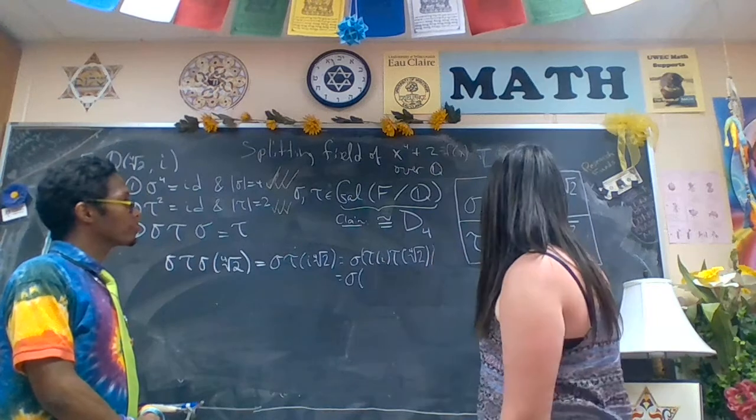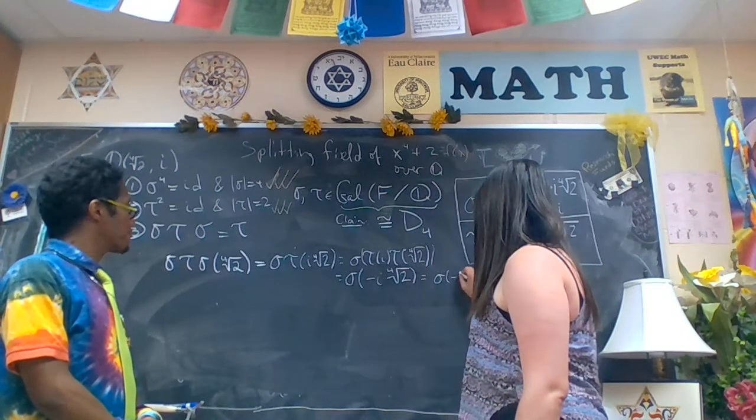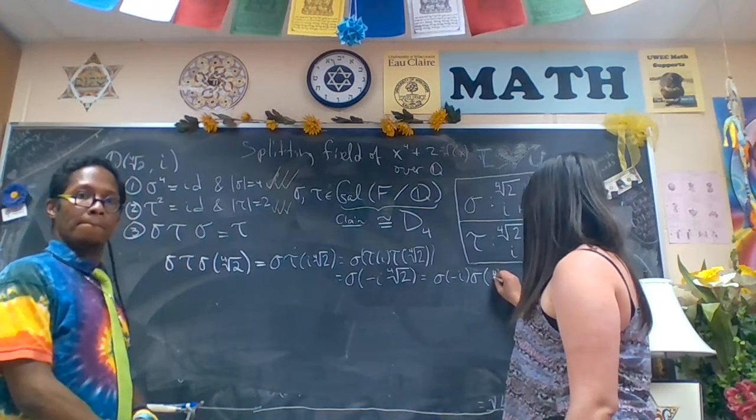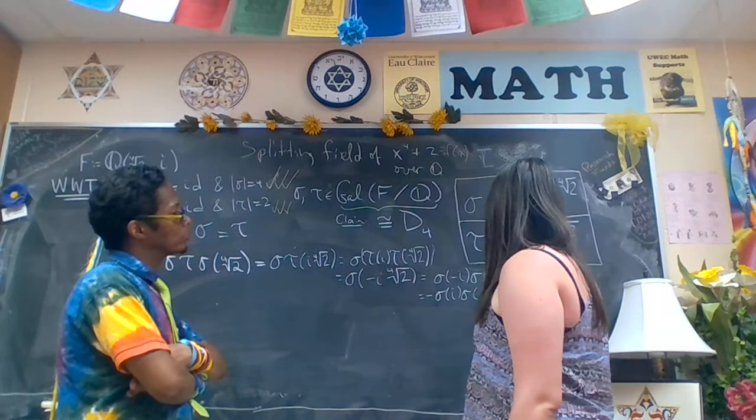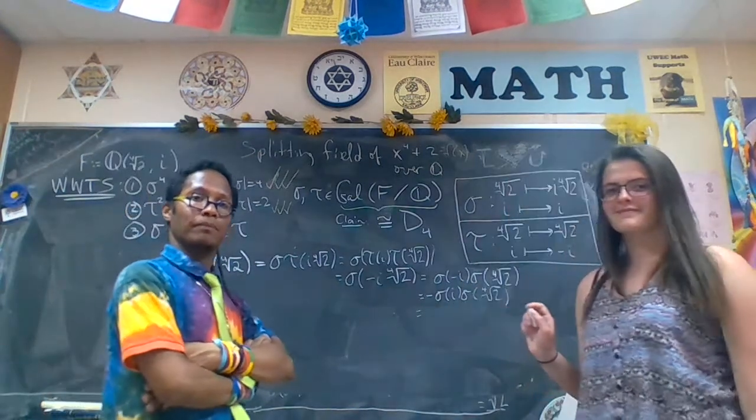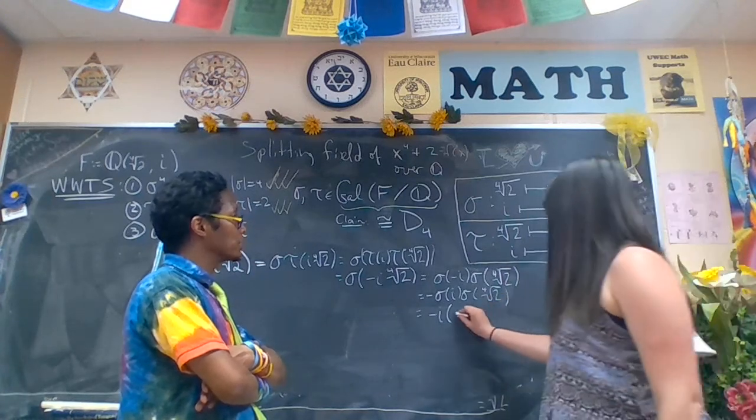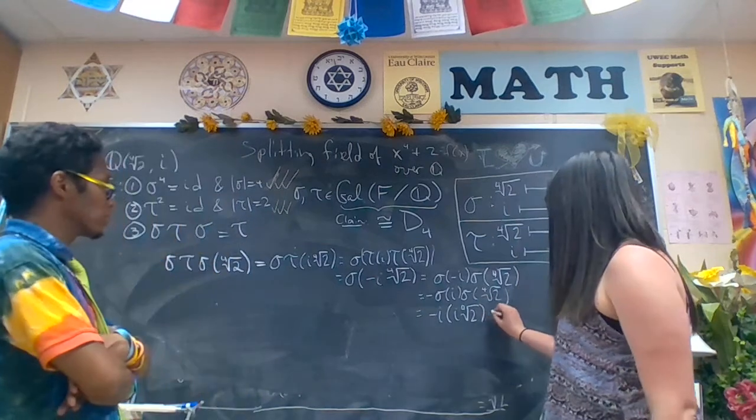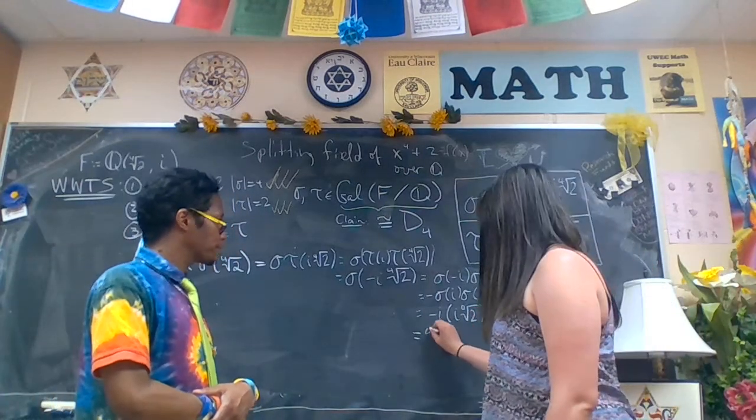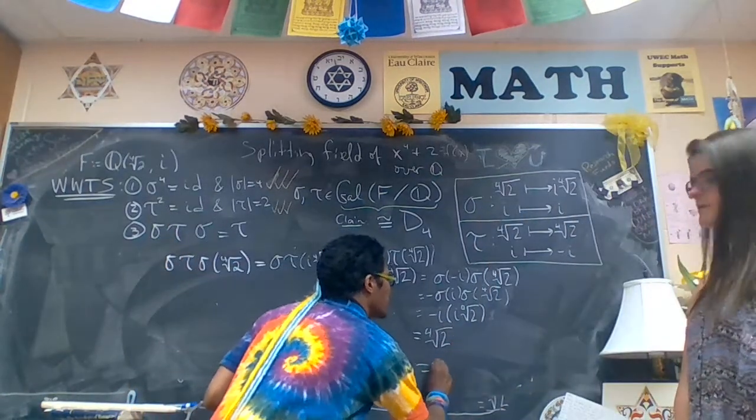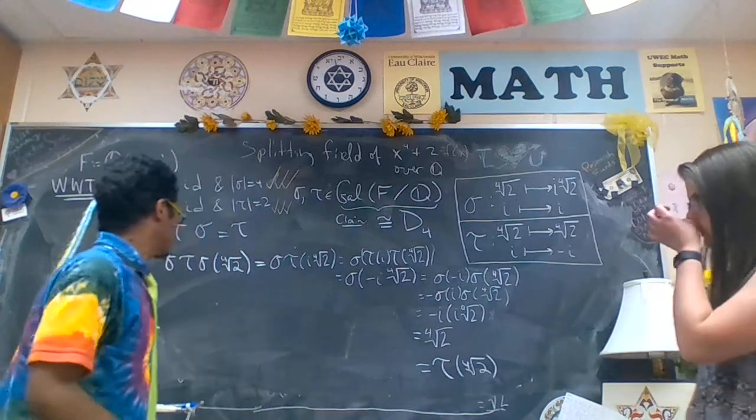So sigma tau sigma on the fourth root of two equals sigma tau of sigma fourth root of two is i fourth root of two. Tau of i is negative i times the fourth root of two. So tau fixes the fourth root of two. So we have sigma now of negative i times sigma of the fourth root of two. So i is fixed and then fourth root of two goes to i fourth root of two. So this gets negative fourth root of two, which is precisely tau of fourth root of two. So on the generator fourth root of two, this triple of automorphisms equals the tau automorphism.